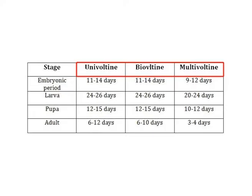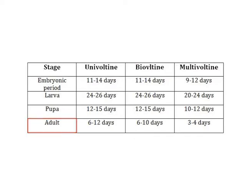When comparing these three, the multivoltine races have the shortest lifespan. For example, the embryonic period is 9 to 12 days, larval period is 20 to 24 days, pupal period is 10 to 12 days, and the adult period is 3 to 4 days in multivoltine races.